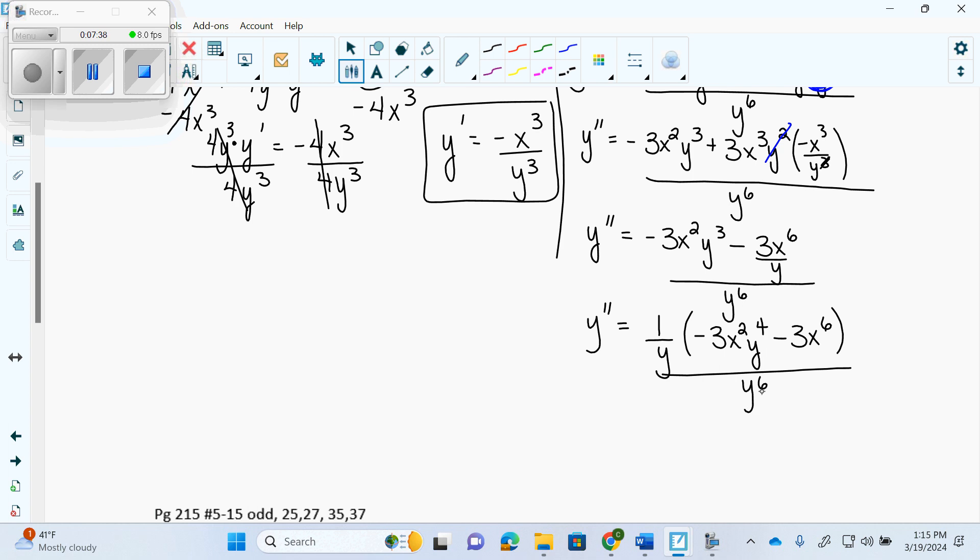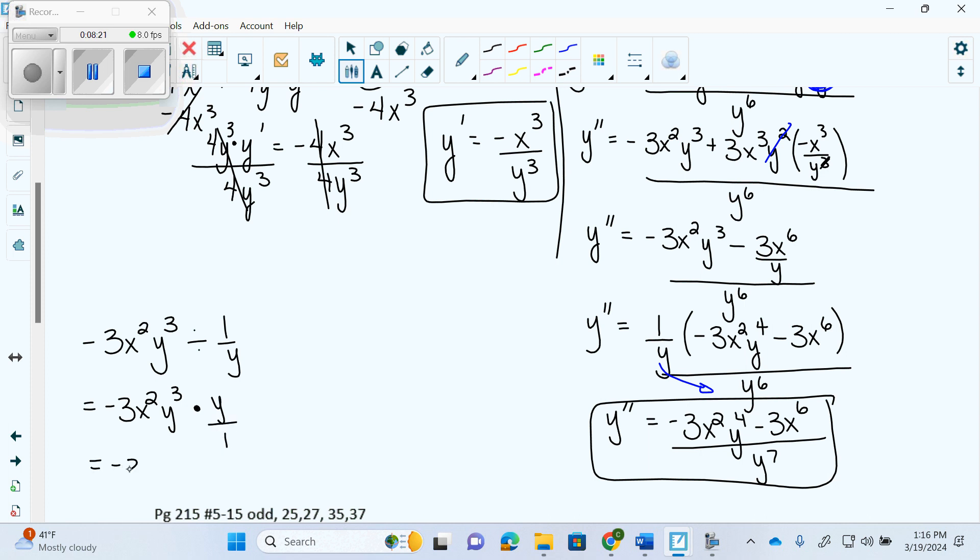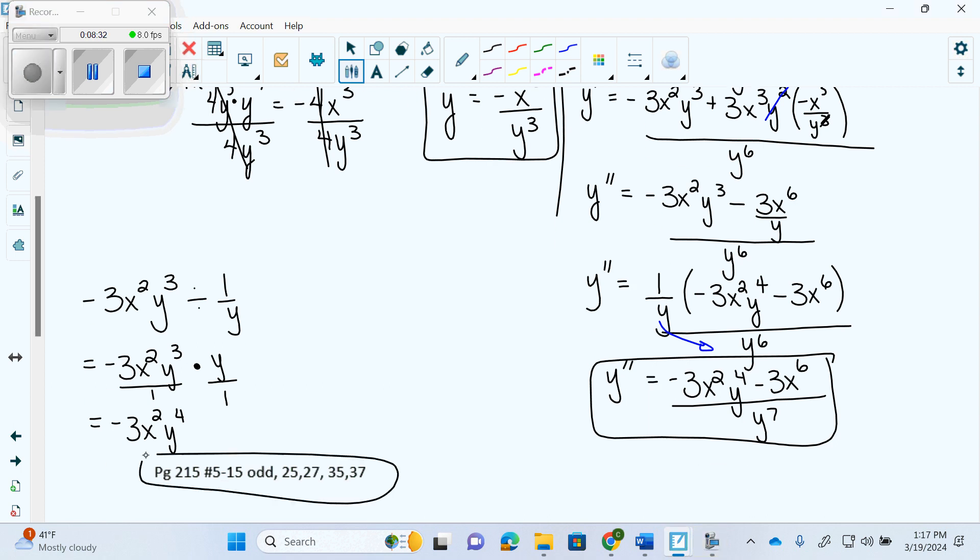So I'm going to get y double prime equals negative 3x squared y to the 4 minus 3x to the 6 over y to the 6. If I take this first term, which is negative 3x squared y cubed, and I gcf out a 1 over y, that means I'm dividing by 1 over y, which is actually the same as multiplying by y over 1, which is why it gets to be negative 3x squared y to the 4. That's your homework, and it's due.